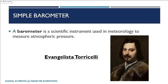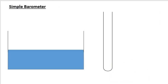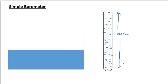Torricelli's Barometer was designed by Evangelista Torricelli, and the use of a barometer is to measure atmospheric pressure. Here we have a 100 centimeter long test tube which is completely filled with mercury to the top. We make sure that there are no air bubbles inside. This test tube and a container are both filled with mercury — the container is half filled with mercury.